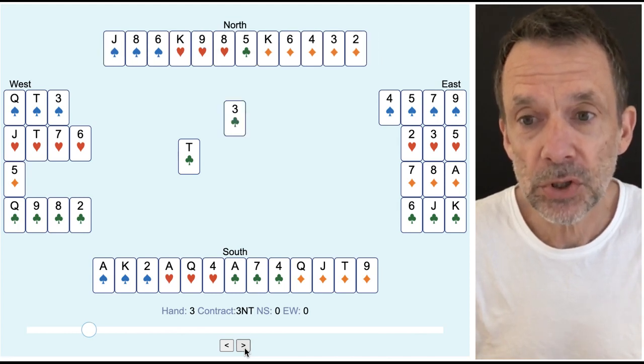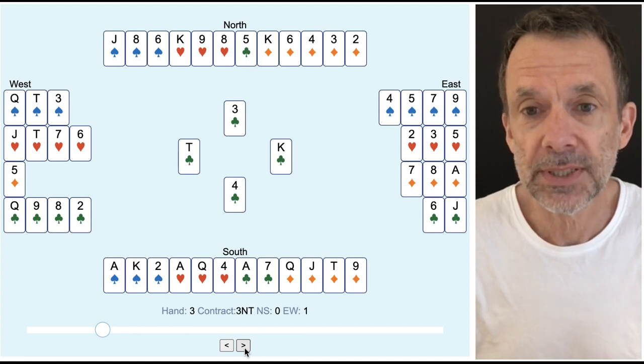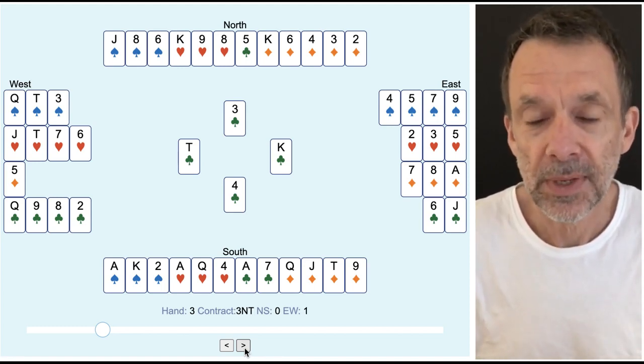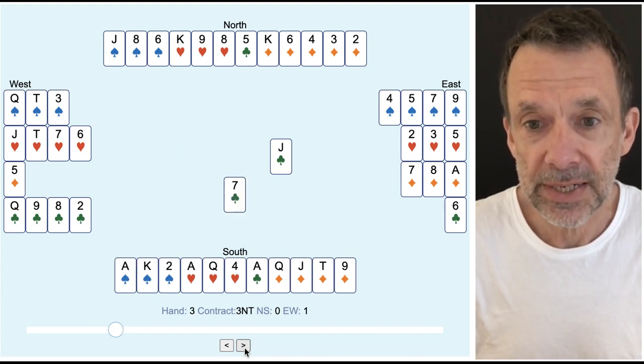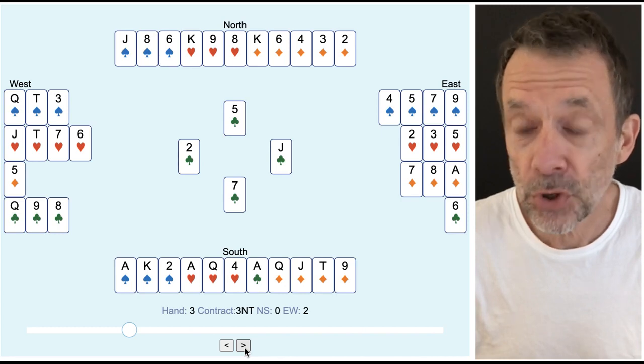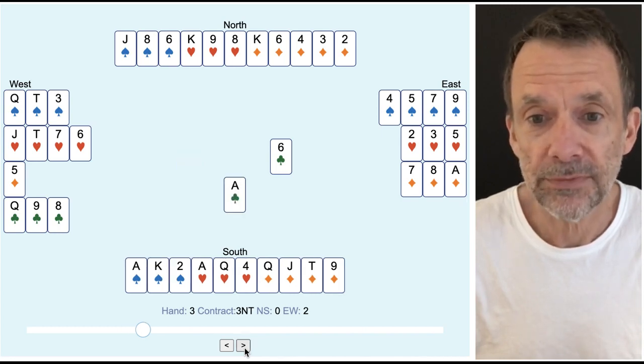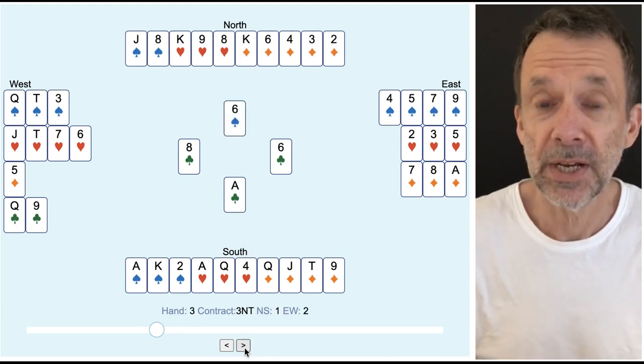So here I'm going to duck the first round of clubs. Duck just means play low when I could have won the trick. East plays another club and I'm going to let east win that one and east plays a third round of clubs which I finally win throwing away a spade from the north hand.